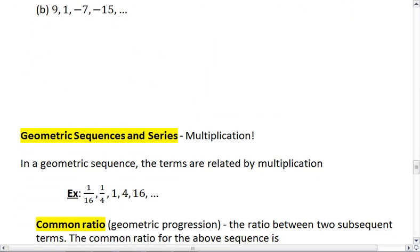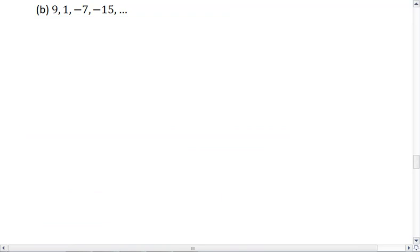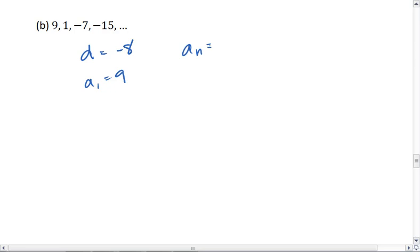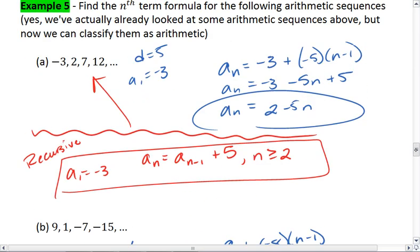Let's look at b. Here I see that I am constantly adding negative 8 each time, and that my first term is 9. This means that my formula a sub n is going to be my first term 9 plus negative 8 times n minus 1. I can distribute and then simplify just like I did above.